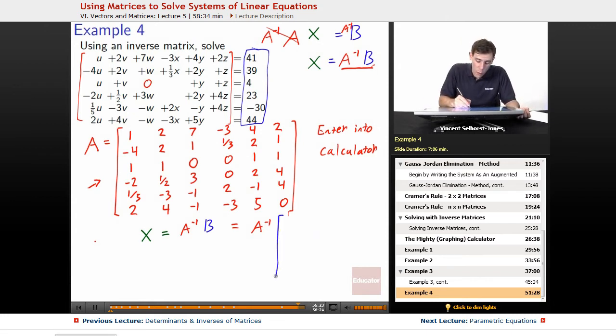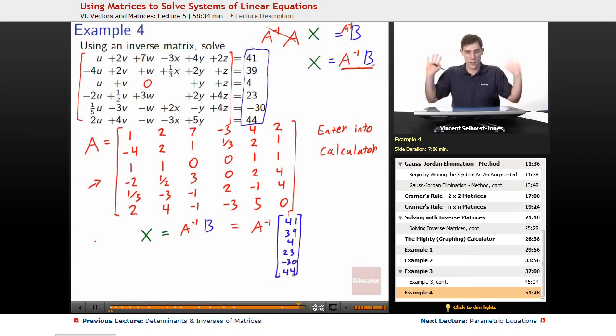So we leave in the calculator, we know X is going to be equal to A inverse times B, right? That's what we just figured out from our game plan of thinking about this. So we have in our calculator A inverse is in there. We have it in the calculator. We don't have to actually see what the whole thing is because it is already there. What is our B? We enter in the column matrix 41, 39, 4, 23, negative 30, 44. We make sure that our A inverse is multiplying from the left side, otherwise it won't work at all.